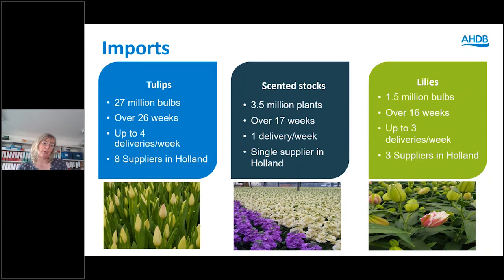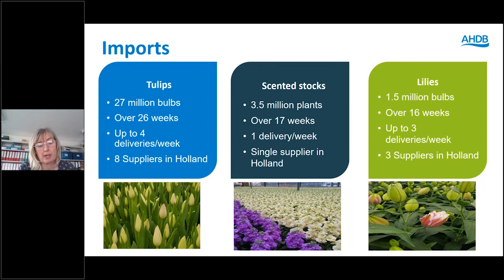We import all our tulip bulbs — about 27 million — coming in over 26 weeks with around four deliveries a week from eight different suppliers in Holland. We buy about three and a half million scented stock plants from a single supplier in Holland, one delivery per week over 17 weeks. We also buy around one and a half million lily bulbs, coming in over 16 weeks with up to three deliveries a week from three different suppliers in Holland.